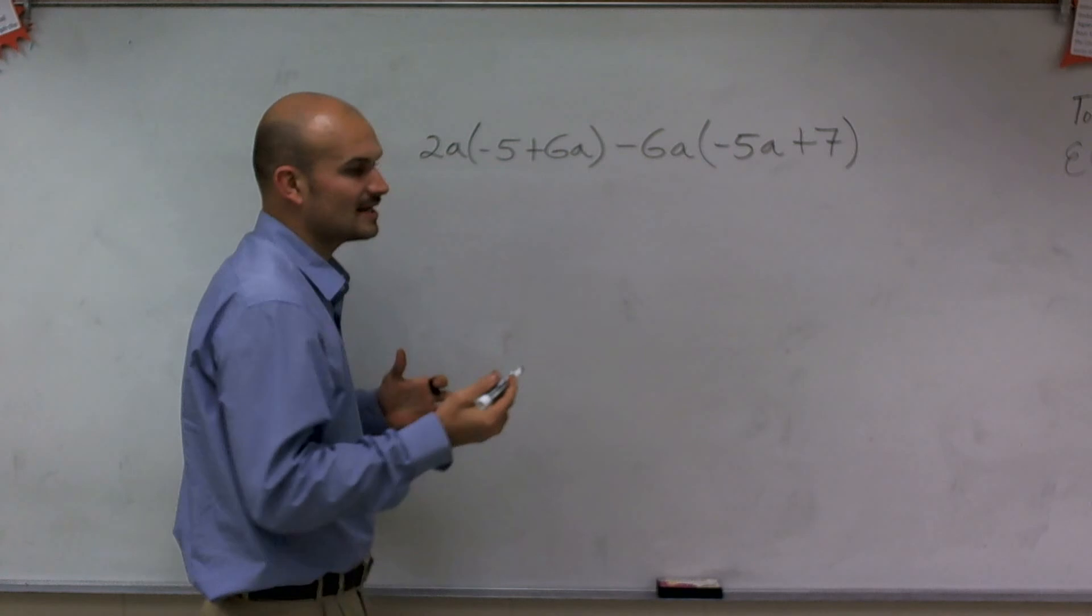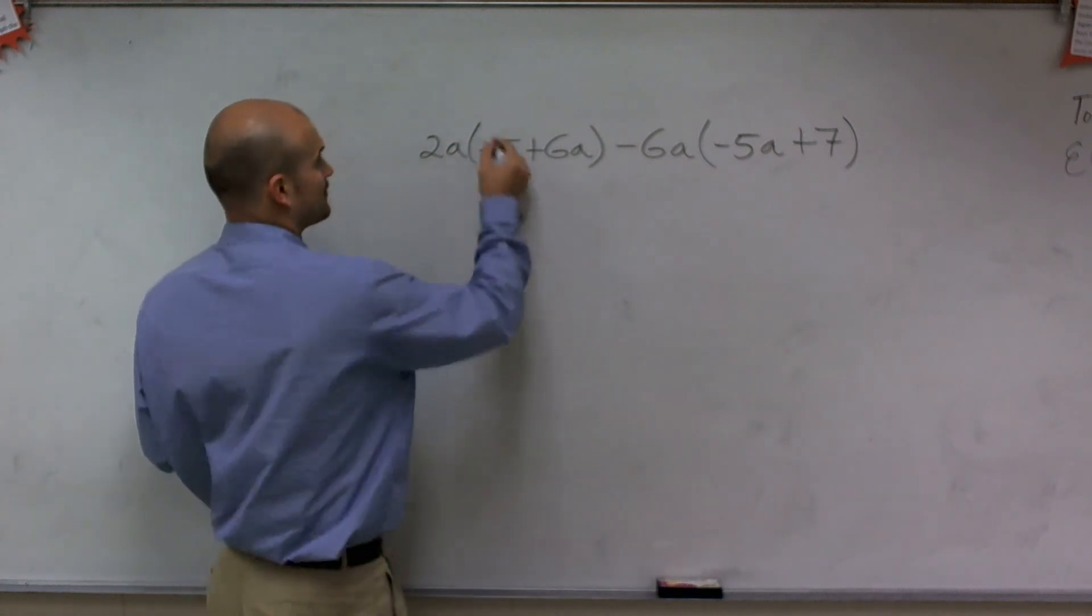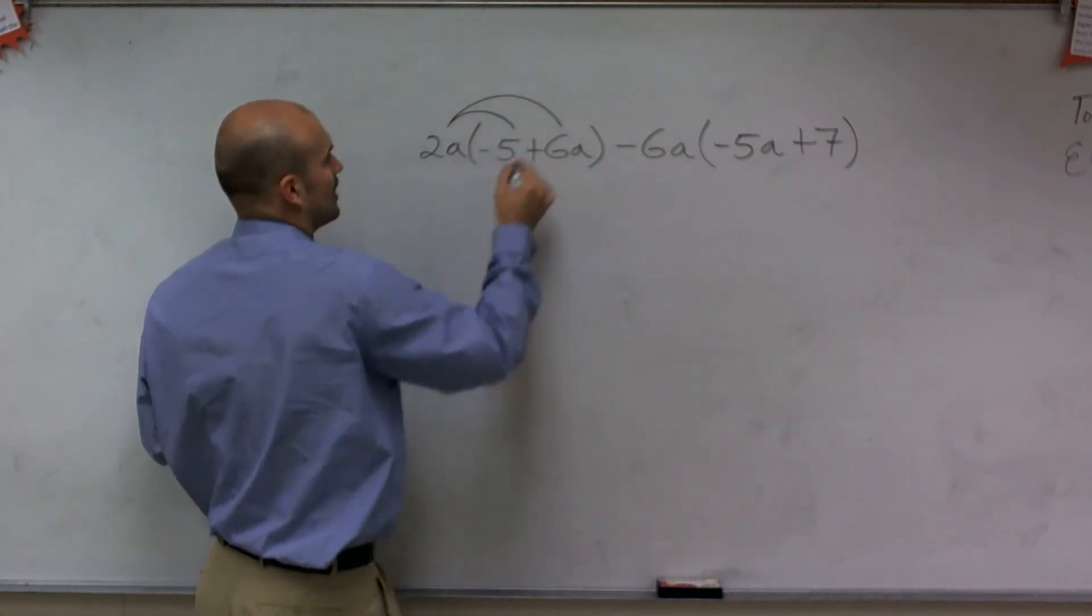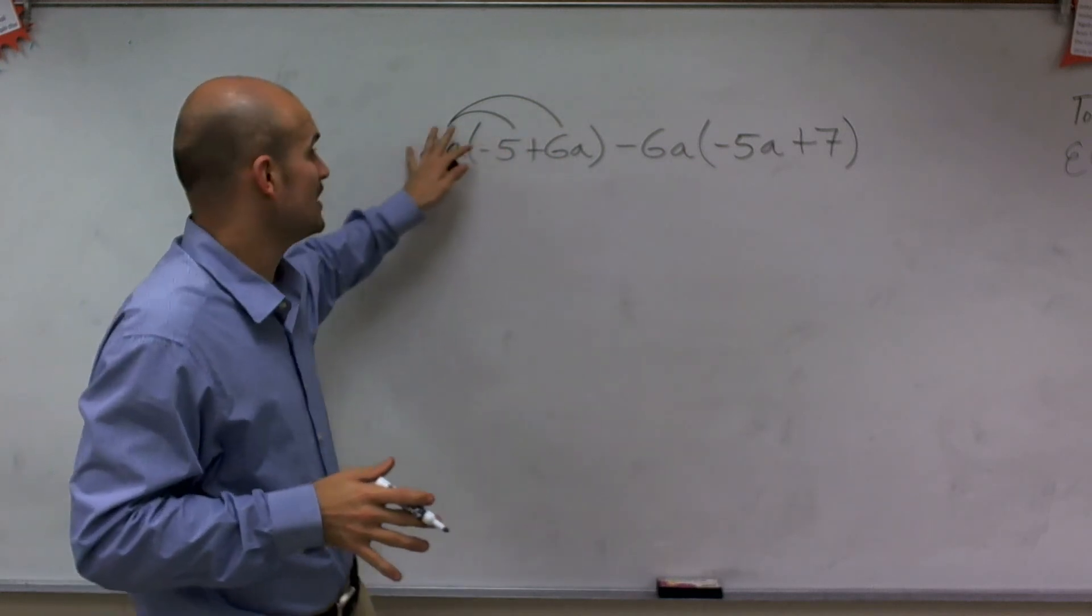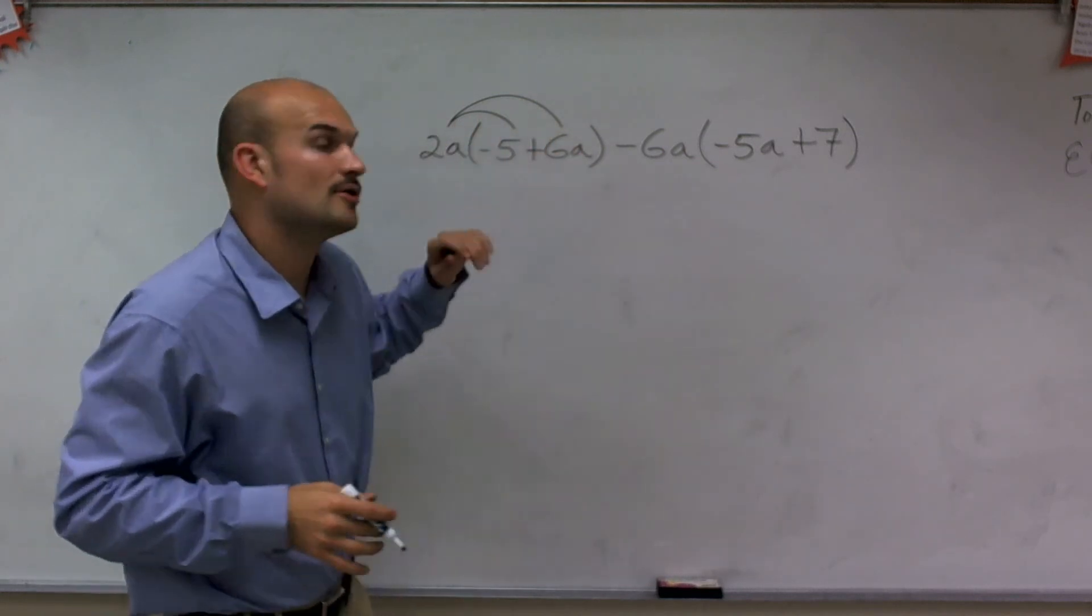So then the next thing I need to do is apply the distributive property. I'm going to multiply the number I'm multiplying by the parentheses. I need to make sure I multiply that number times both terms inside the parentheses.